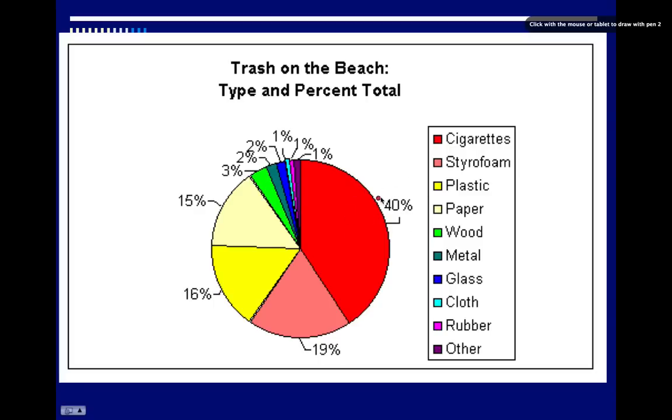And then just to make sure that the graph was done well we can make sure that their numbers add up to an appropriate number. So here we have 40% with cigarettes, 19% styrofoam that's 59% plus 16% so we have 69 plus 6 that's 75%. 15% more is paper that makes 90% all together.